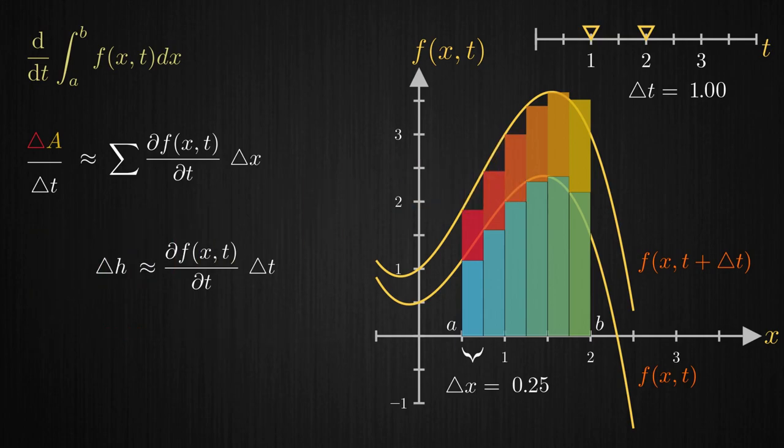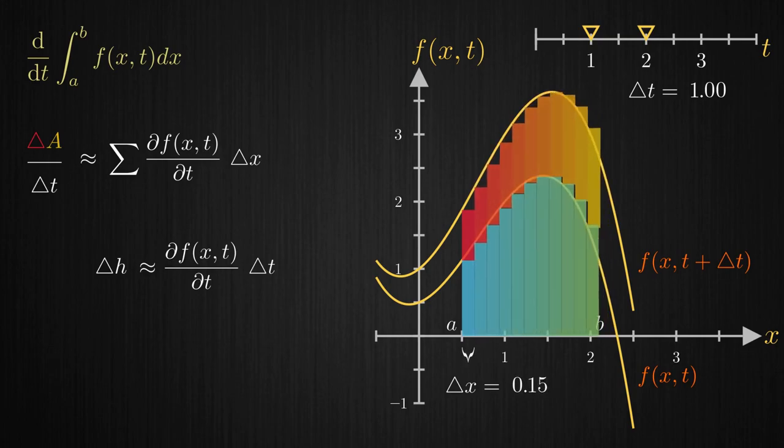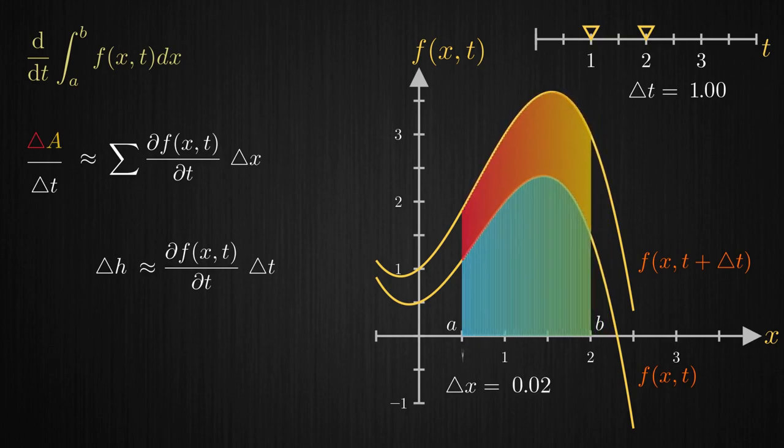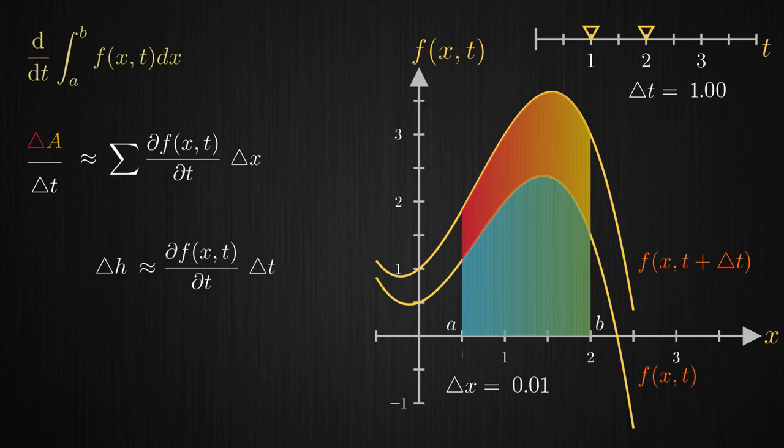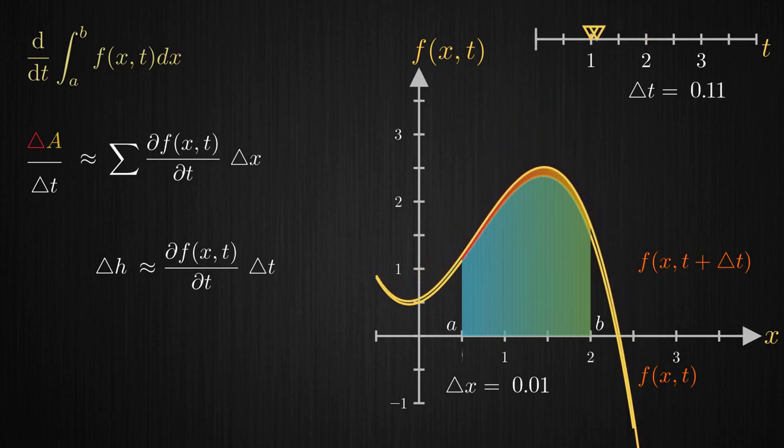If you recall from the introduction, letting Δx approach 0 converges the area of these rectangles to the actual area under the curve that we are looking for. And letting Δt approach 0 makes the approximation for the change in height of the rectangles less and less wrong.